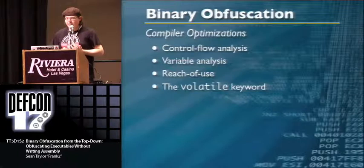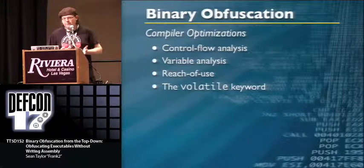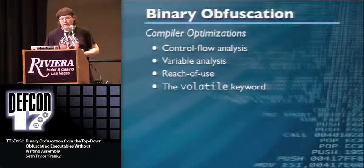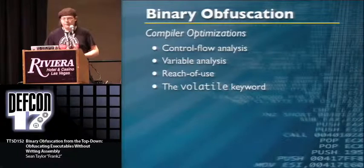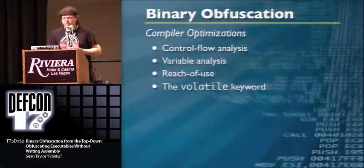We're going to cover four types of analysis that compilers perform: control flow analysis, variable analysis, reach of use, and — something very interesting — the volatile keyword.